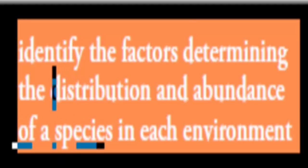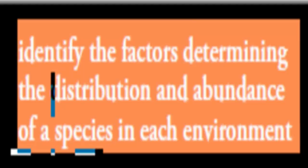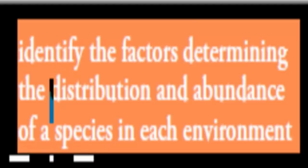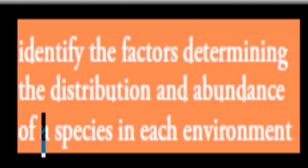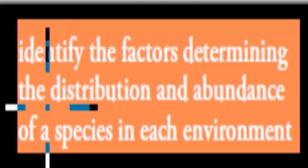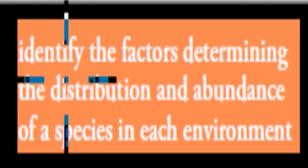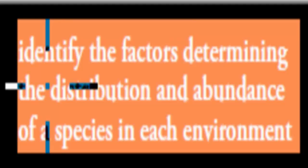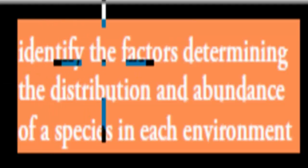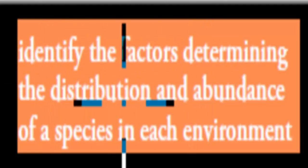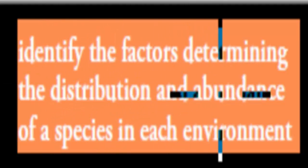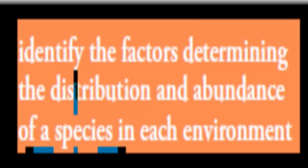Welcome back. In the last video we compared some of the abiotic features of both terrestrial and aquatic environments. We're going to cover the next dot point now, and this is all about distribution and abundance. It says: identify the factors determining the distribution and abundance of a species in each environment.